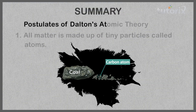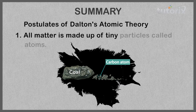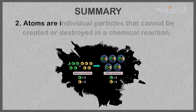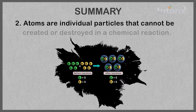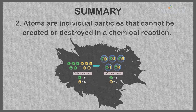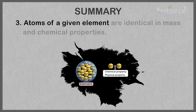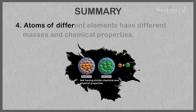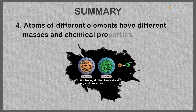Postulates of Dalton's Atomic Theory: All matter is made up of tiny particles called atoms. Atoms are individual particles that can't be created or destroyed in a chemical reaction. Atoms of a given element are identical in mass and chemical properties. Atoms of different elements have different masses and chemical properties. Atoms combine in a ratio of small whole numbers to form compounds.